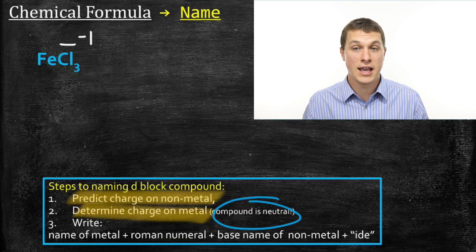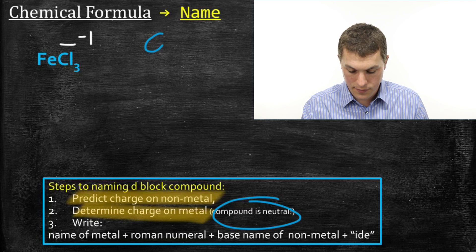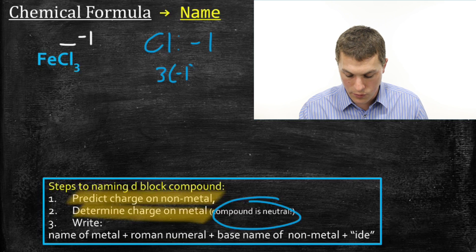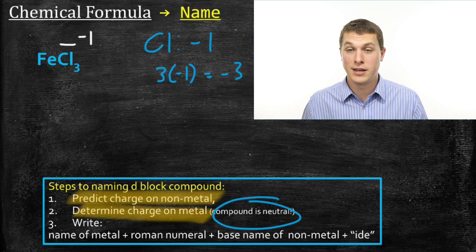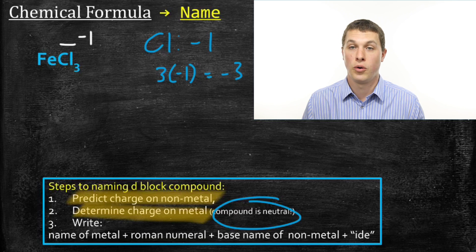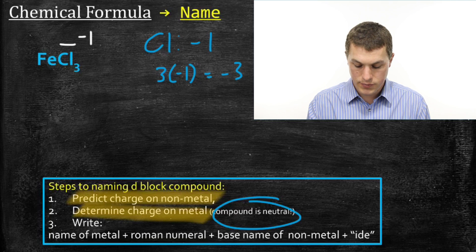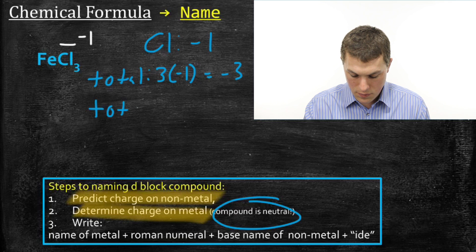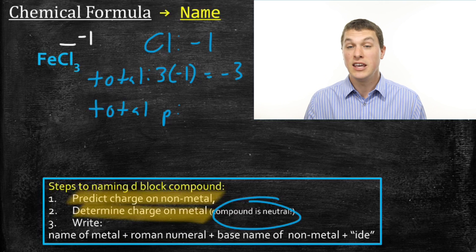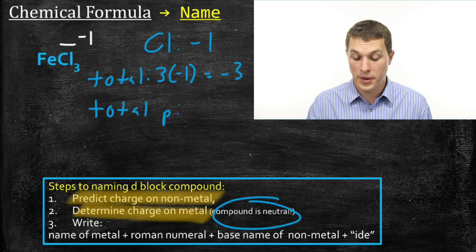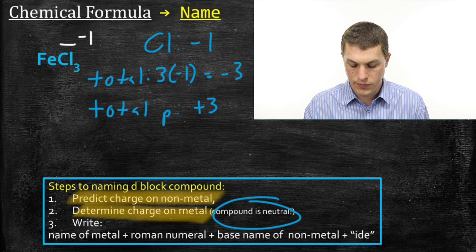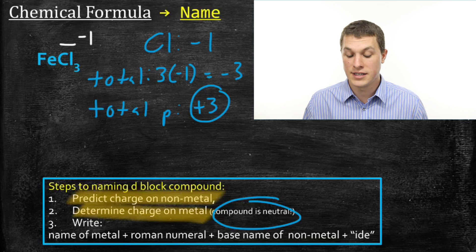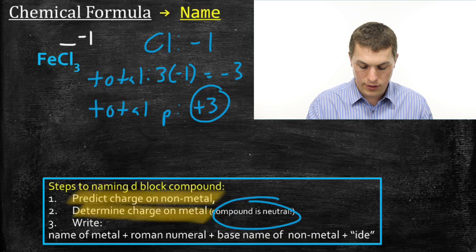Step two is to determine the charge on the metal. The key thing to remember is that our compound is neutral. Our anion is chlorine with a negative one charge. There are three chlorines, so our total negative charge is three times negative one, which gives a total negative charge of negative three. Since the total negative charge is negative three, the total positive charge must be equal and opposite — positive three. So the charge on iron is plus three because all the non-metals combined give a charge of negative three. We write plus three above the iron.